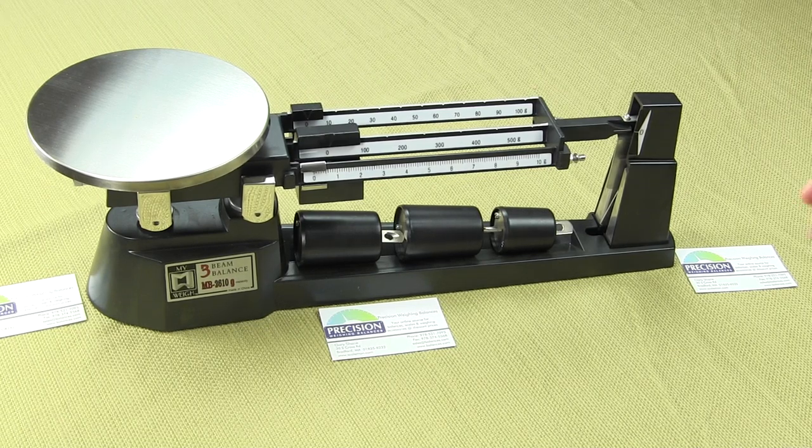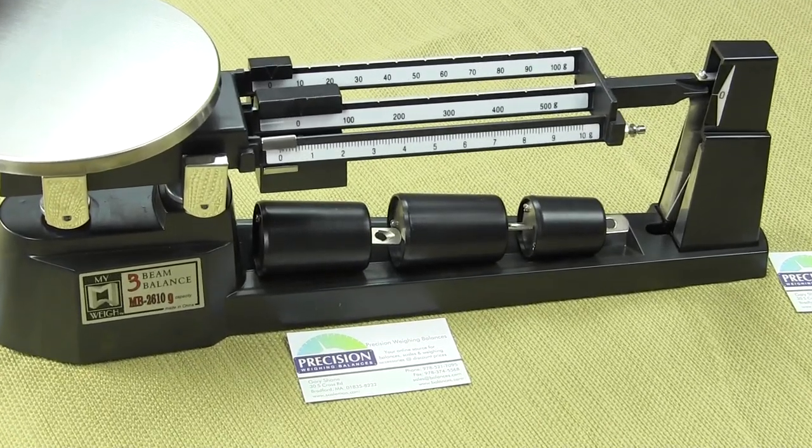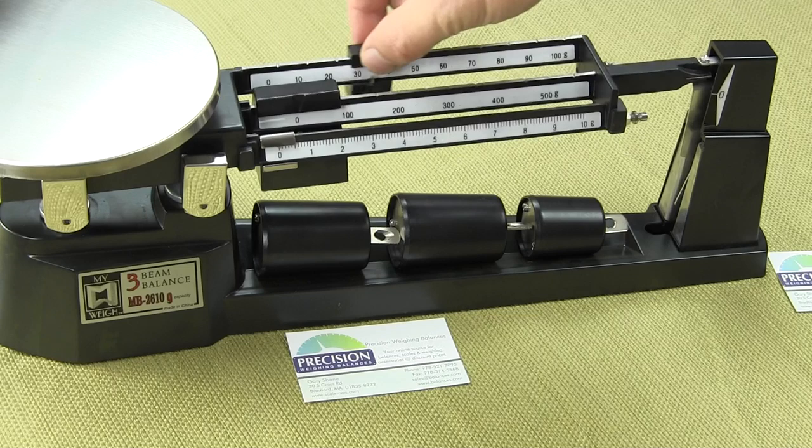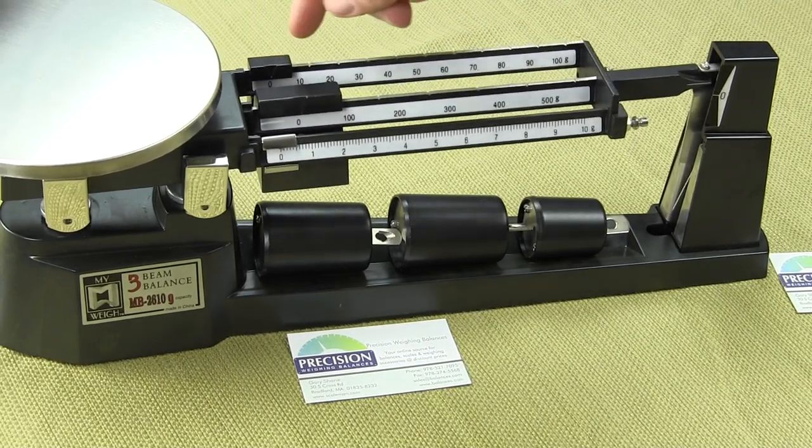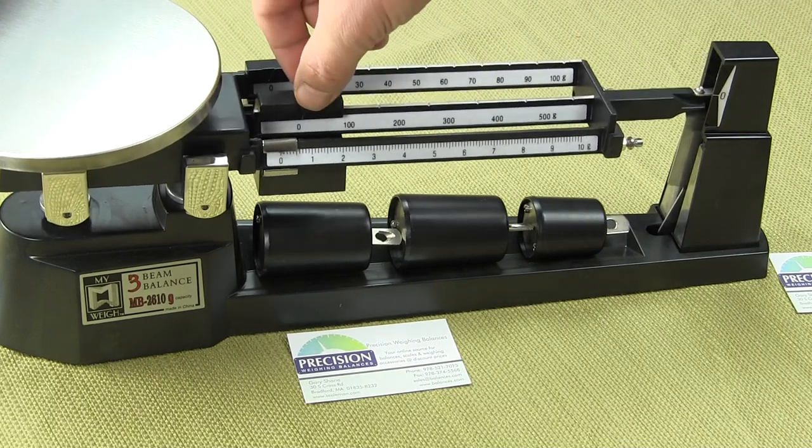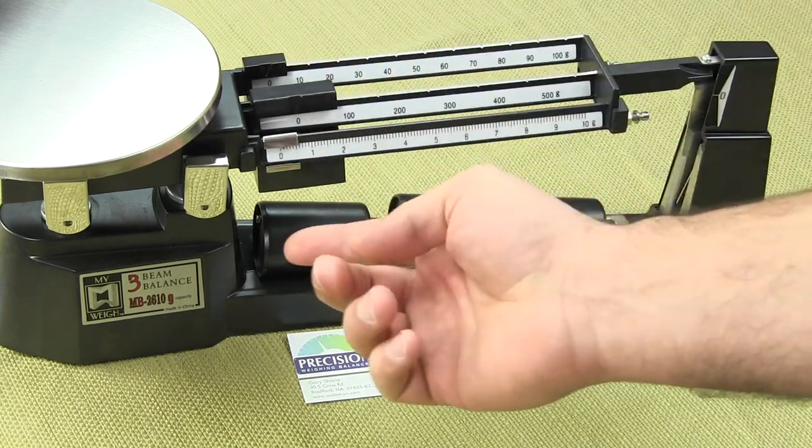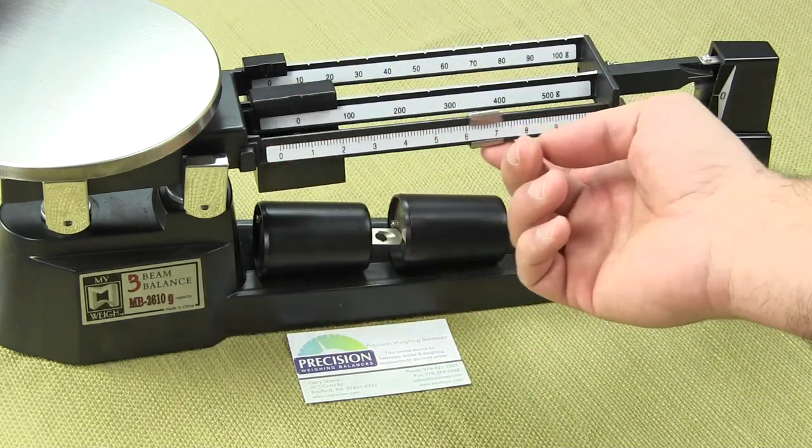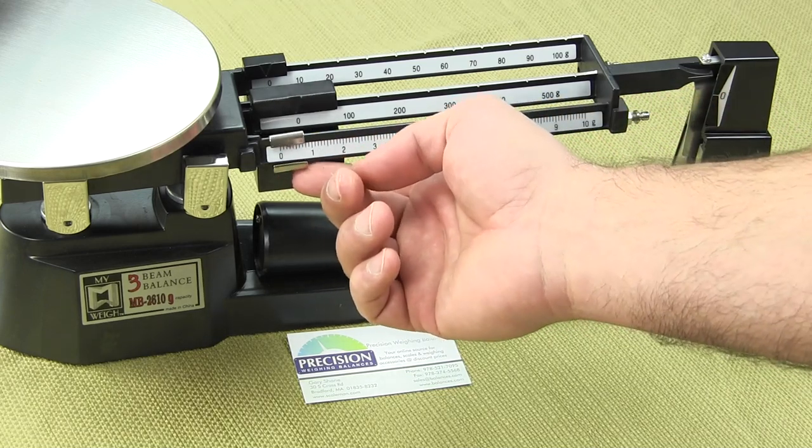This triple beam balance is called a three beam balance because there are three beams here. The beam all the way in the back is from 0 to 100 grams, the center beam goes from 0 to 500 grams, and the very front beam is from 0 to 10 grams with graduations to a tenth of a gram.